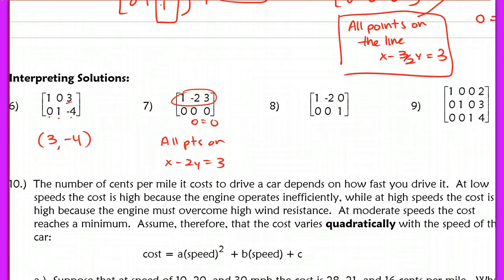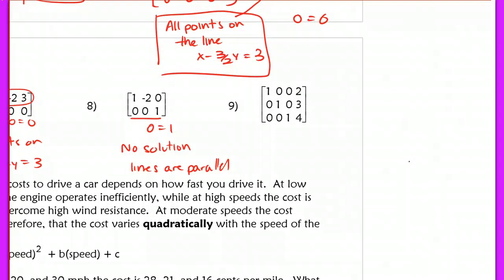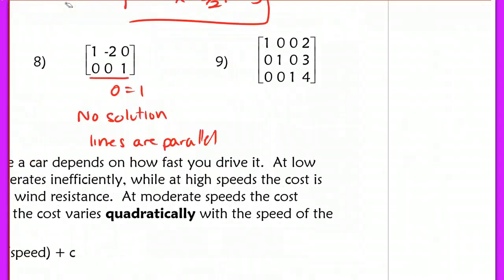In problem number 8, this in the bottom is false. 0 does not equal 1, so this has no solution because our lines are parallel. It's very similar to what we did in problem number 1, the first three questions that were all the exact same.